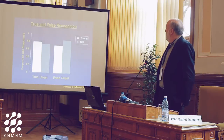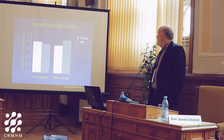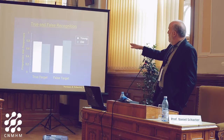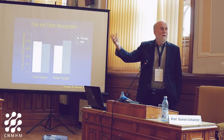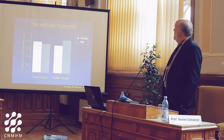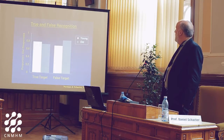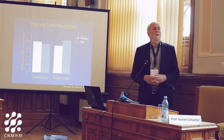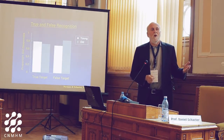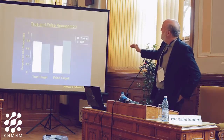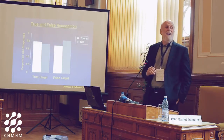Some early data from my lab compared college students and older adults in the DRM paradigm. For true targets, about 80% of the time both young and old subjects will correctly say a word was on the list. For false targets — the related lure words — about 75% of young adults and an even higher proportion of older adults claim that 'sweet' was on the list. The false alarm rate to an unrelated word is down around 15%, so you're going from 15% up to over 80%. It's a very powerful memory illusion.